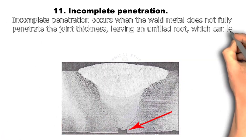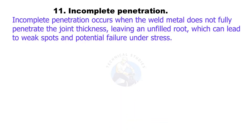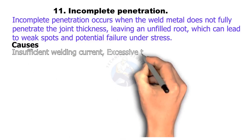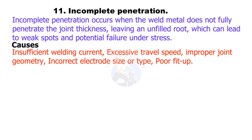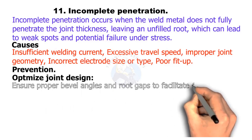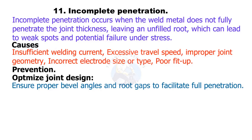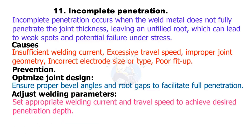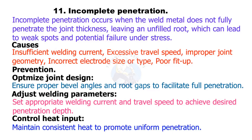Incomplete penetration occurs when the weld metal does not fully penetrate the joint thickness, leaving an unfilled root, which can lead to weak spots and potential failure under stress. Causes include insufficient welding current, excessive travel speed, improper joint geometry, incorrect electrode size or type, and poor fit-up. Prevention: optimize joint design with proper bevel angles and root gaps to facilitate full penetration, set appropriate welding current and travel speed to achieve the desired penetration depth, and maintain consistent heat to promote uniform penetration.